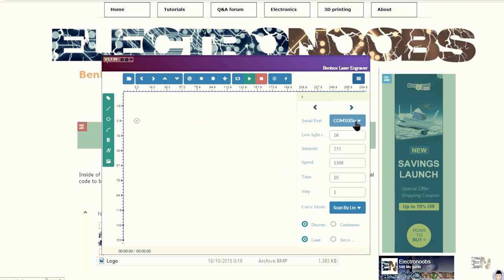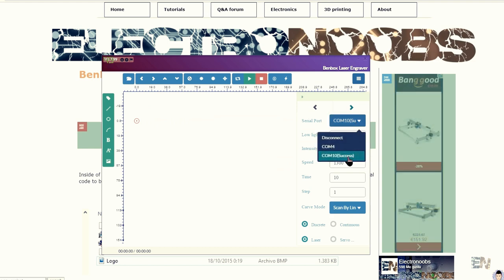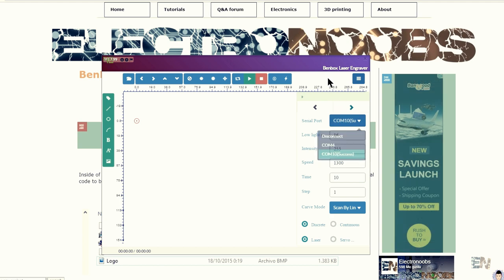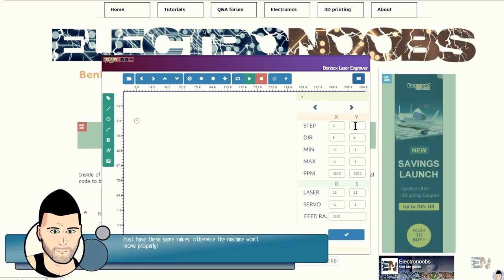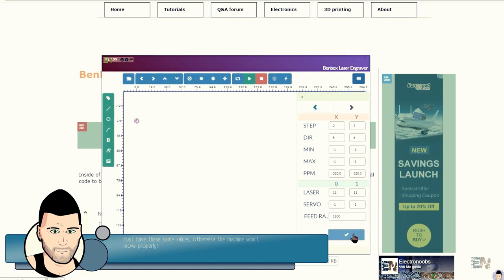Now you should wait till you get the green check mark. Once that is done, go to serial ports. If it says success then you are ready to go. In the parameters you must place these same values as you can see here for the X and Y movement and for the laser as well. Click save and now let's make a test.